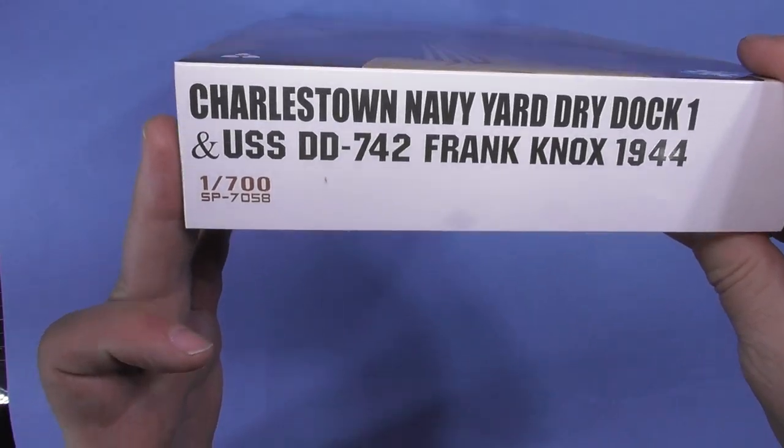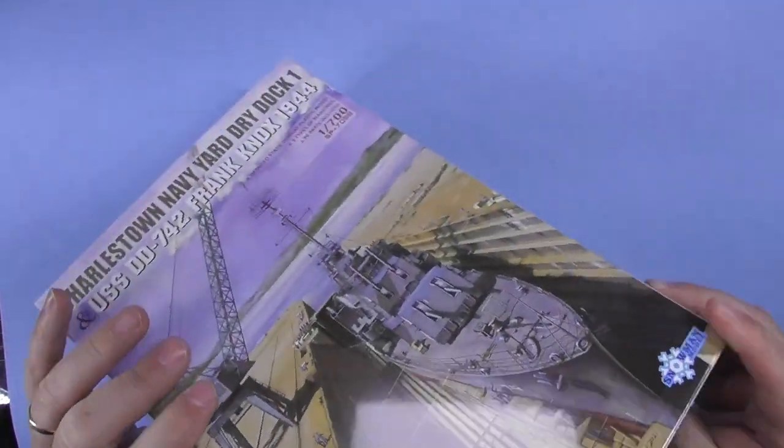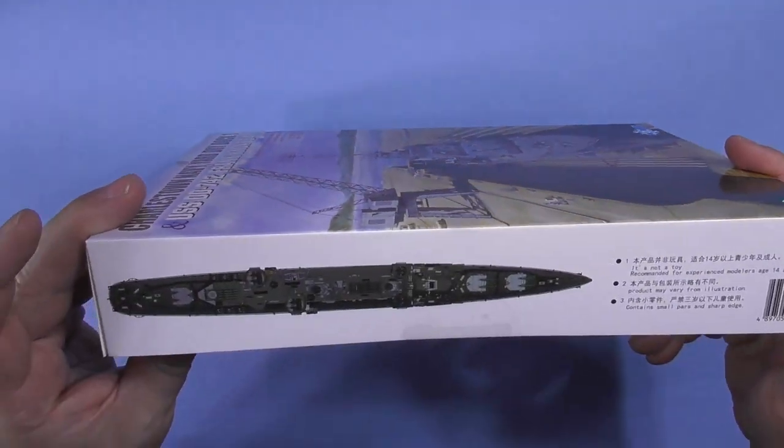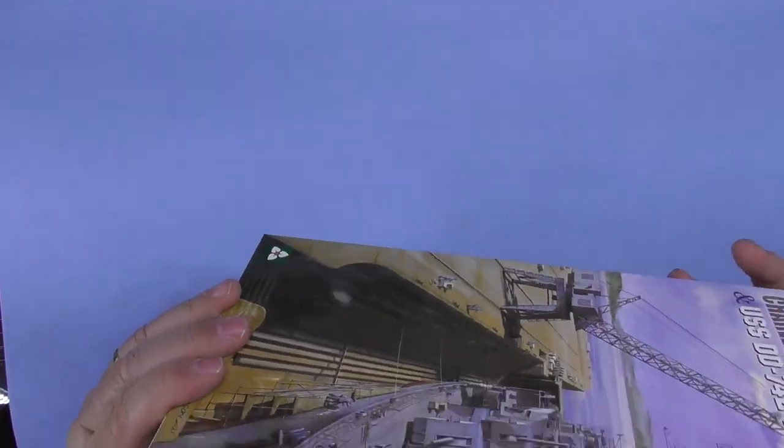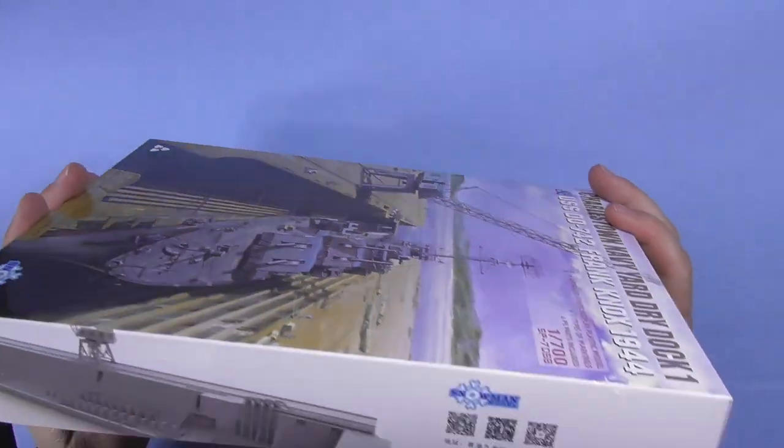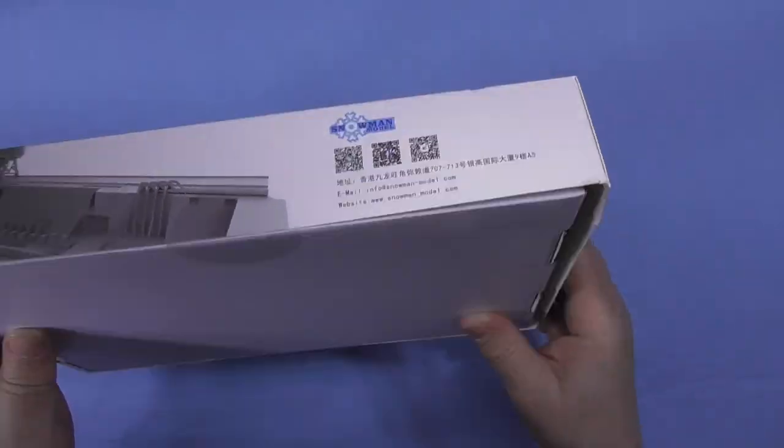Kit number SB7058. Picture of the ship on the side, picture of the dry dock, some QR codes to scan.